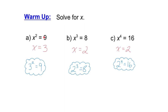x equals 3 for the first one, x equals 2 for the second one, and x equals 2 for the third one. Here's my thinking. I know that 3 squared is 9. I know that 2 to the exponent 3 is 2 times 2 times 2, which is 8. And 2 times 2 times 2 times 2 is 16. So, there you have it.